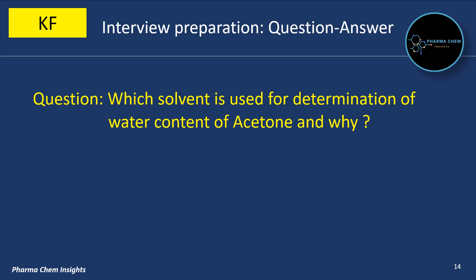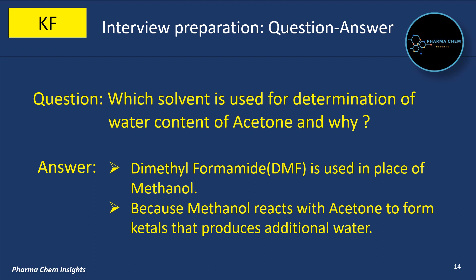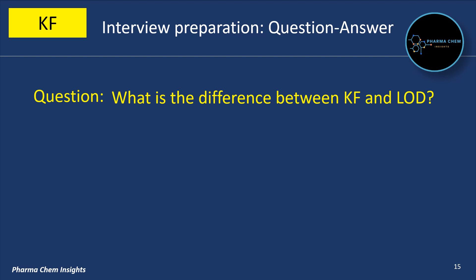Which solvent is used for determination of water content of acetone, and why? Dimethylformamide (DMF) is used in place of methanol for determination of water content of acetone, because methanol reacts with acetone to form ketal, which produces additional water and gives a false reading.